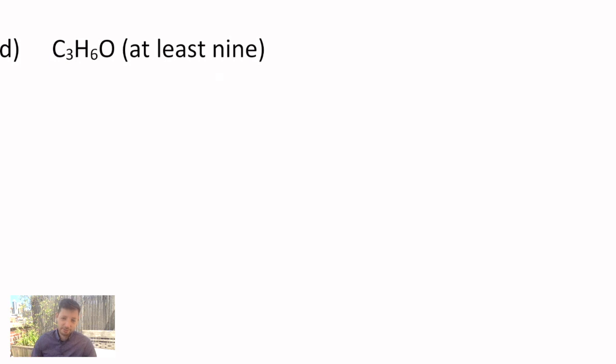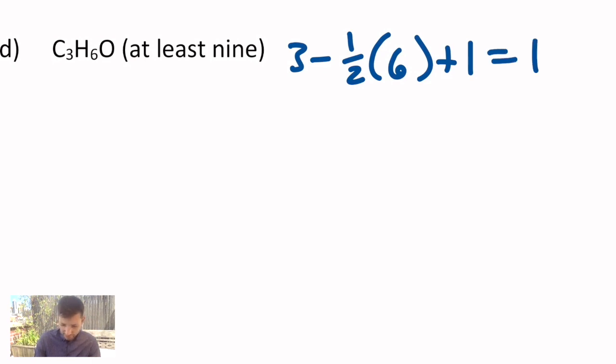Then it gets really complicated. It gets a D, which has three carbons, six hydrogens, and one oxygen. If we do my degrees of unsaturation, you get three minus one-half of six plus one. I get one degree of unsaturation. Let's try to do this systematically. It says there's at least nine.